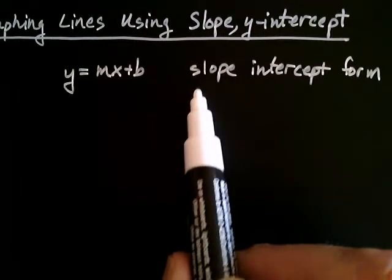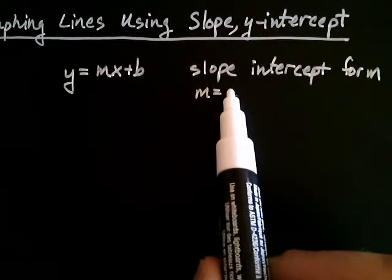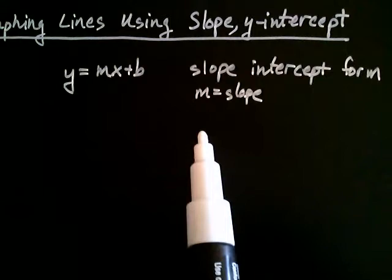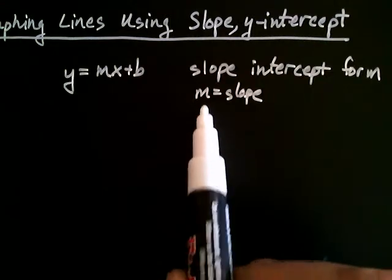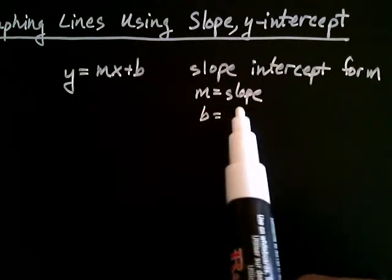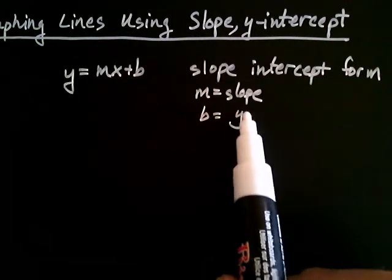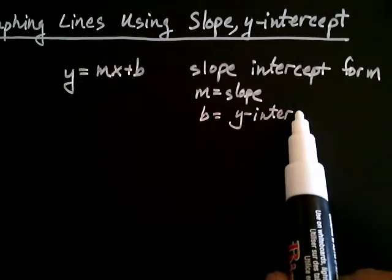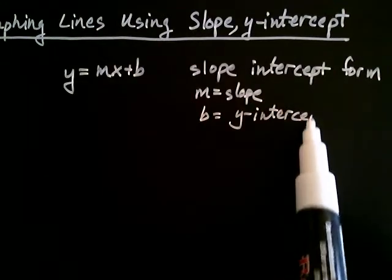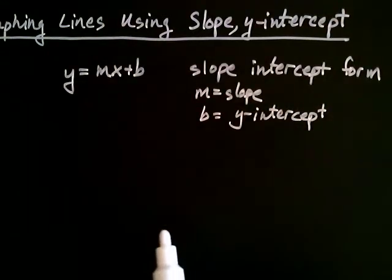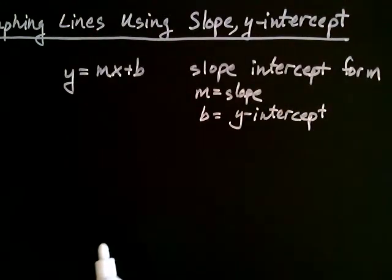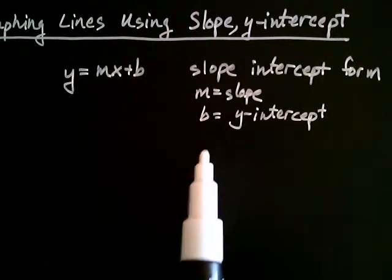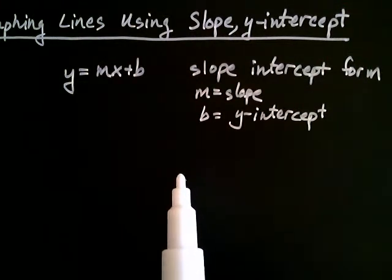Recall that the m is the slope and the b is the y-intercept. The y-intercept is where the line crosses the y-axis. We're going to see how knowing the slope and the y-intercept helps us graph a line.